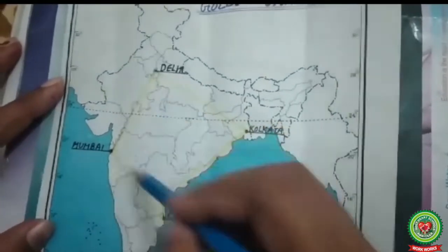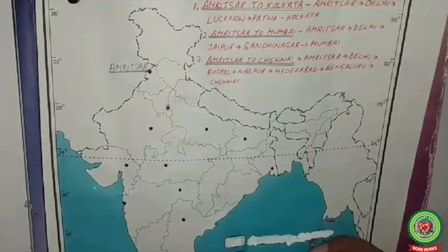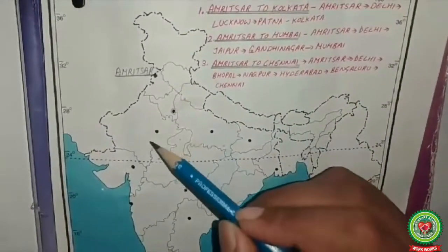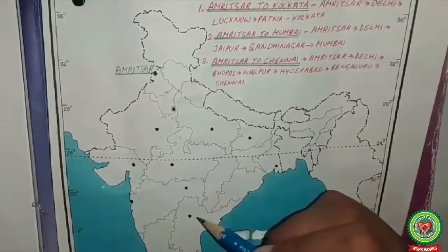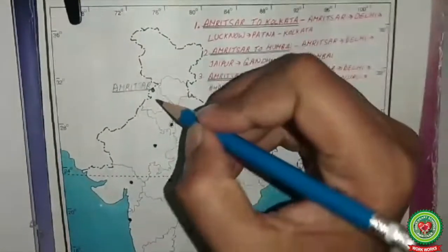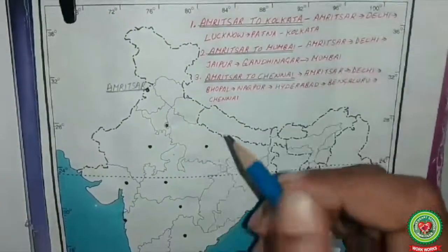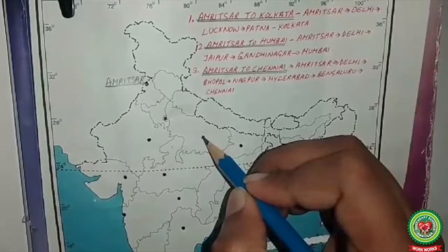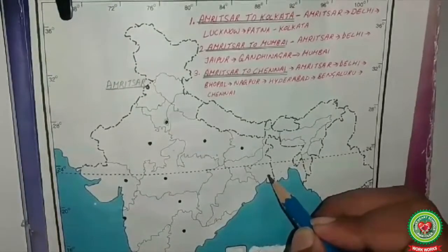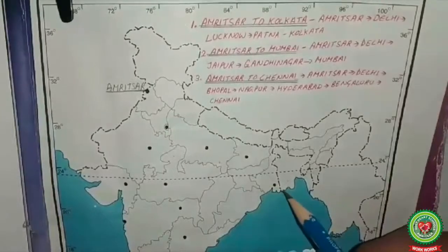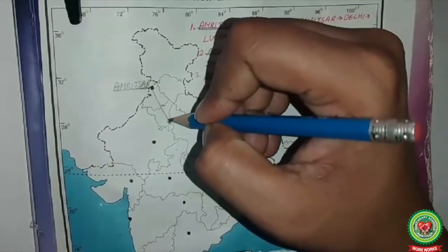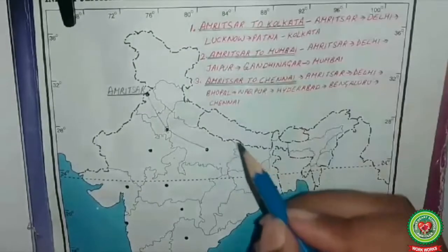This is the second map for today's topic. I have marked the important capitals and cities of different states. To go to Kolkata from Amritsar, you have to mark the points: Amritsar, Delhi, then Lucknow — capital of Uttar Pradesh, Patna — capital of Bihar, and Kolkata — capital of West Bengal. Mark these five points.